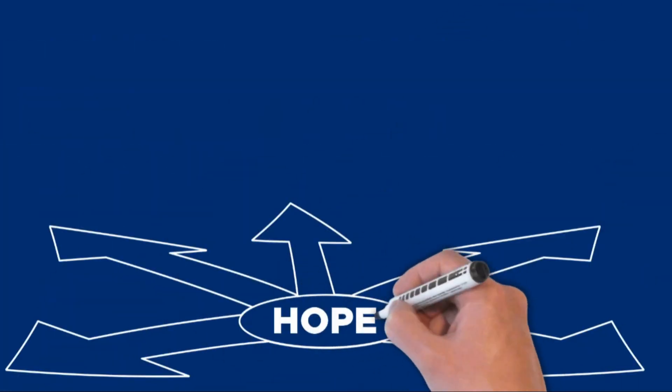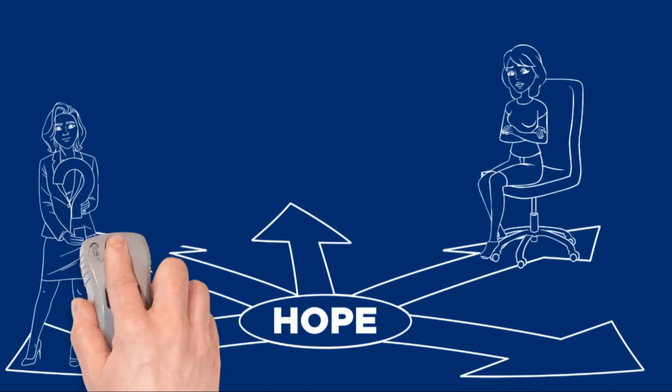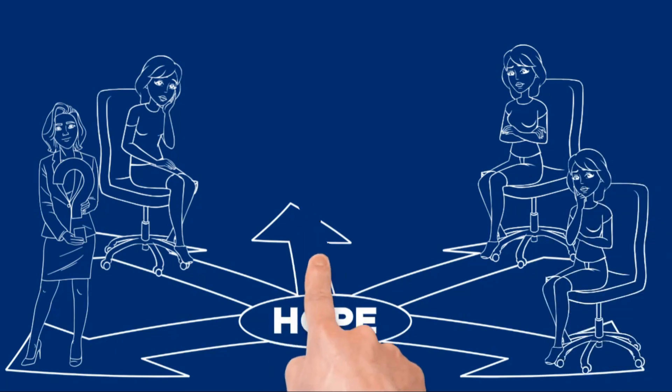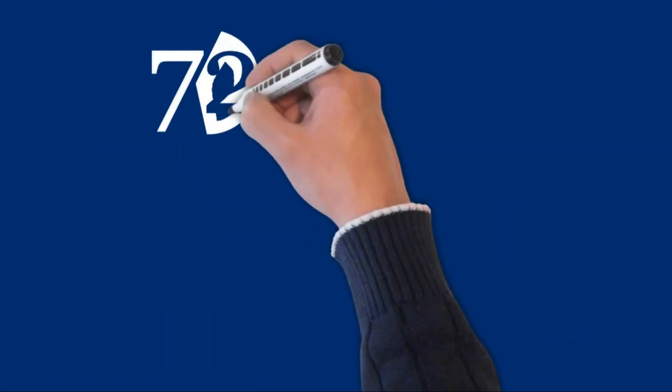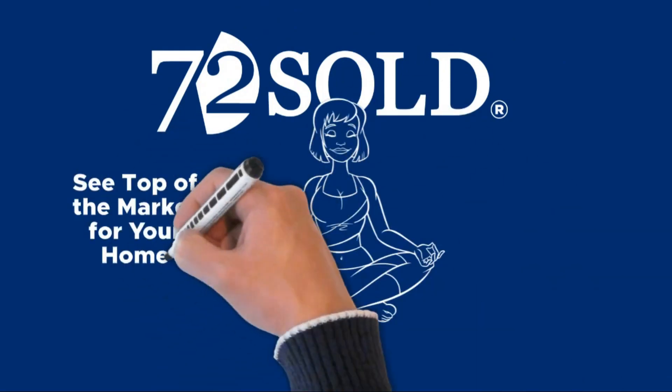Traditional real estate is about hope. You hope buyers inquire, hope they're interested, hope they make offers, and hope their offers are fair. With 72Sold, you don't hope. You are confident you're seeing absolute top of the market for your home quickly and conveniently.